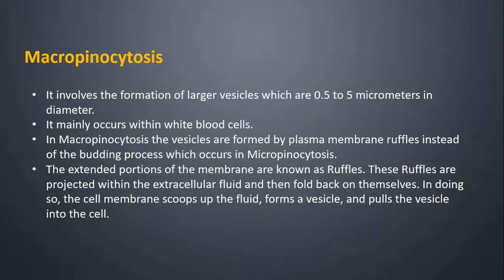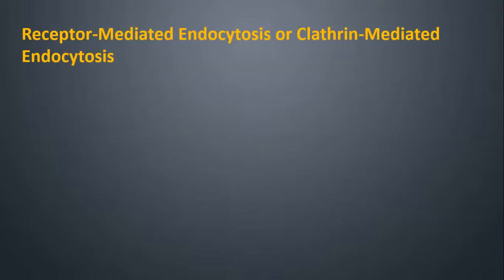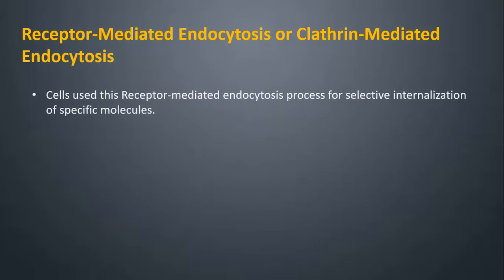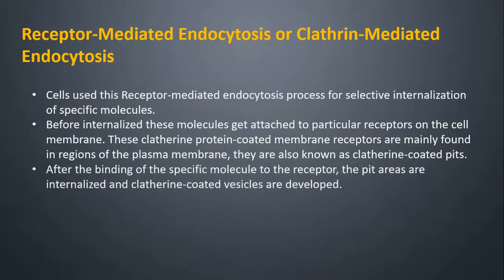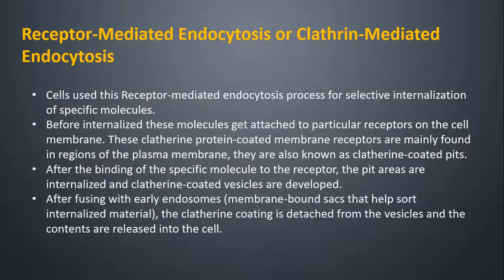Receptor-mediated endocytosis, or clathrin-mediated endocytosis: Cells use this process for selective internalization of specific molecules. Before being internalized, these molecules get attached to particular receptors on the cell membrane. These clathrin protein-coated membrane receptors are mainly found in regions of the plasma membrane, also known as clathrin-coated pits. After the binding of the specific molecule to the receptor, the pit areas are internalized and clathrin-coated vesicles are developed. After fusing with early endosomes — membrane-bound sacs that help sort internalized material — the clathrin coating is detached from the vesicles and the contents are released into the cell.